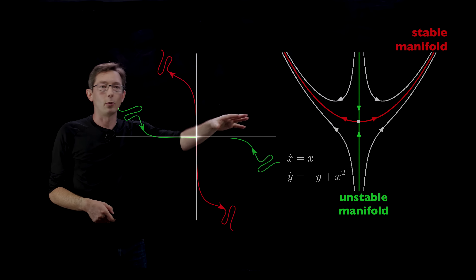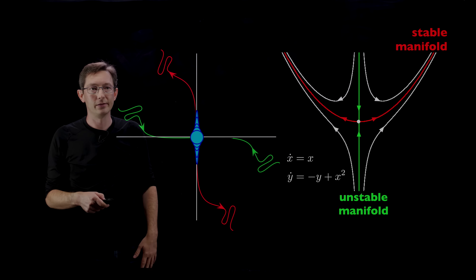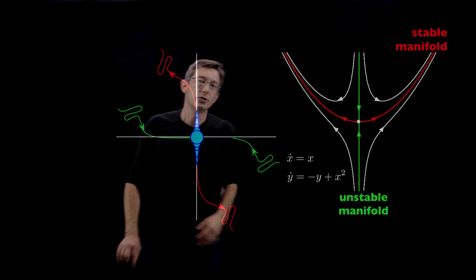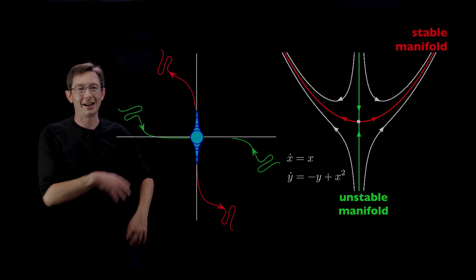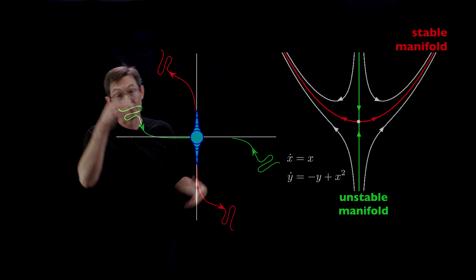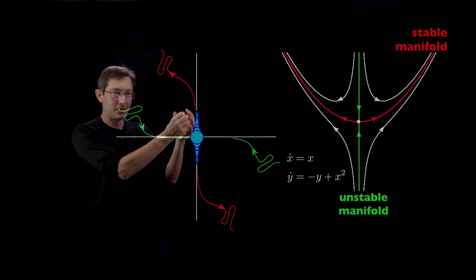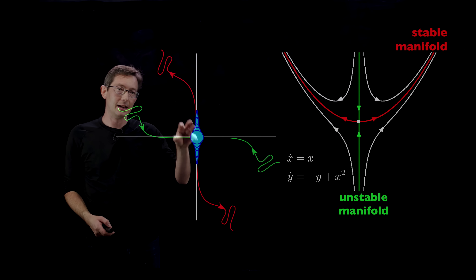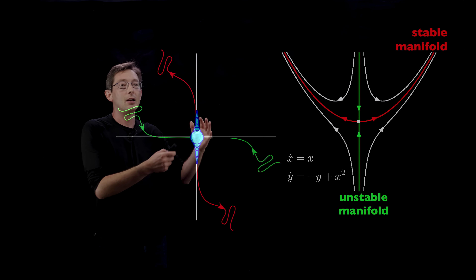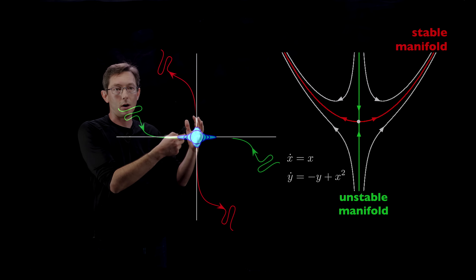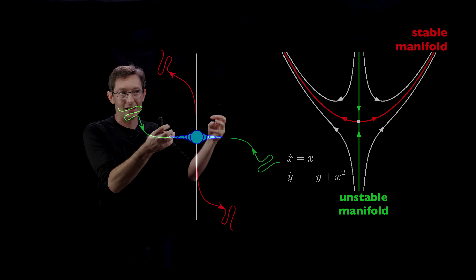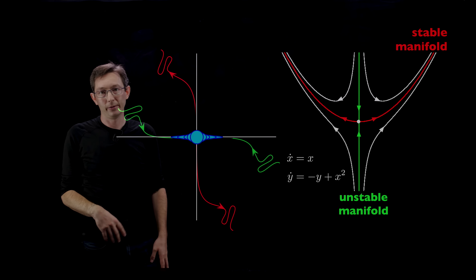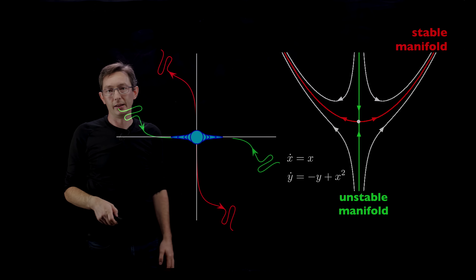Saddle points tend to amplify uncertainty. If you advance balls of uncertainty forward in time, they squash along the stable manifold and stretch along the unstable manifold. Things get stretched and folded — this is closely related to how chaos works by amplifying uncertainty.